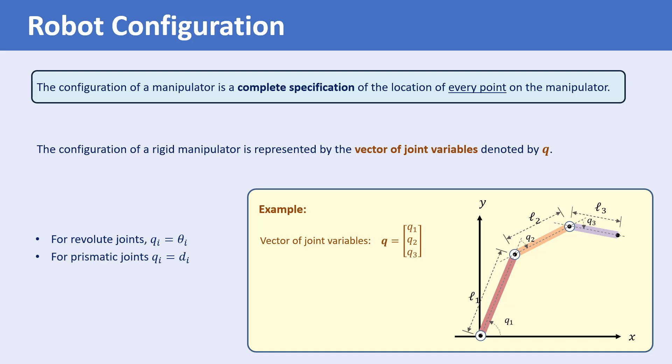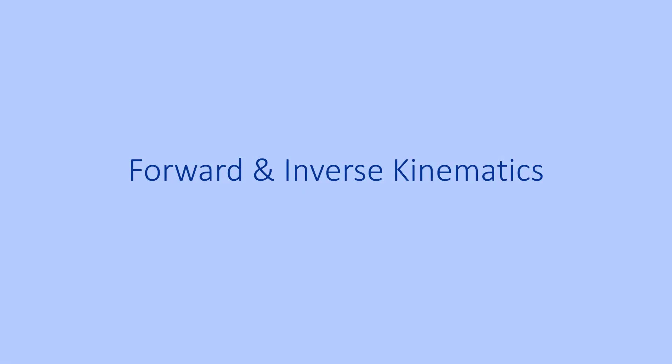For revolute joints, the entries qi are the angles theta_i, and for prismatic joints, qi are the linear displacements, denoted by d_i. Kinematic analysis is the study of the geometry of motion of a robot without considering the torques and forces that cause the motion.